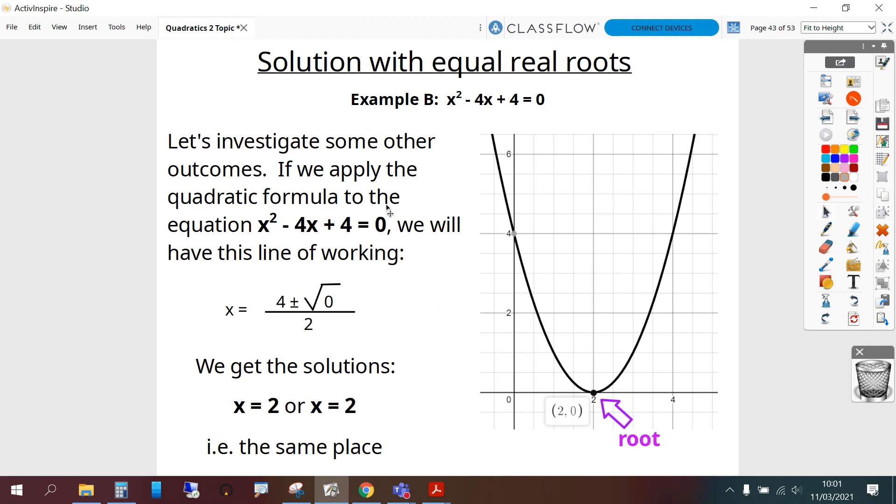Let's investigate some other outcomes. If we apply the quadratic formula to this equation which is x squared minus 4x plus 4 equals 0, we would have this line of working and we'll get the solutions x equals 2 or x equals 2, i.e. the same answer and therefore the same place on the graph. So we get one root here.